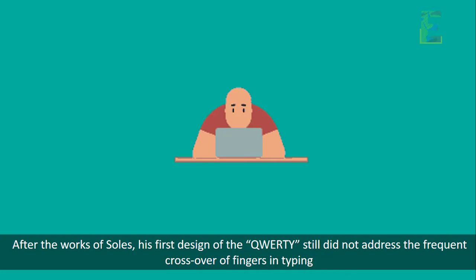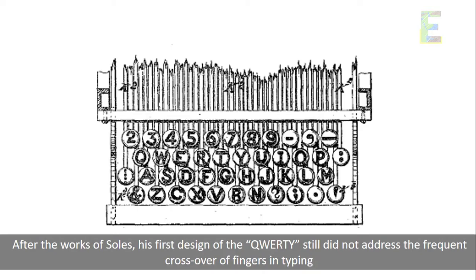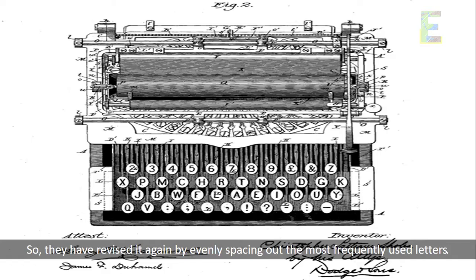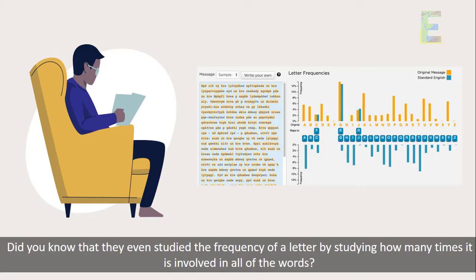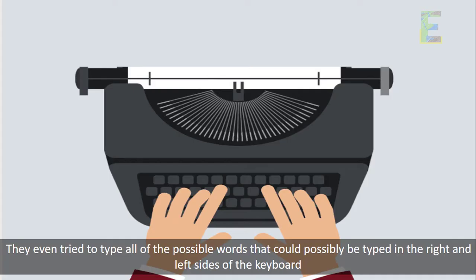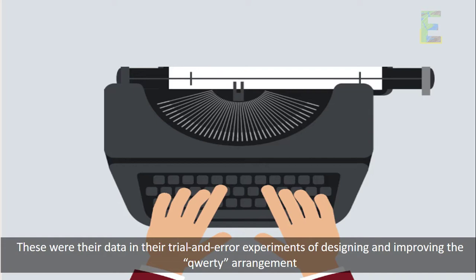After the works of Sholes, his first design of the QWERTY still did not address the frequent crossover of fingers in typing. So they revised it again by evenly spacing out the most frequently used letters. They even studied the frequency of each letter by examining how many times it appeared across all words, and tried typing all possible words on the right and left sides of the keyboard. These were the data from their trial and error experiments in designing and improving the QWERTY arrangement.